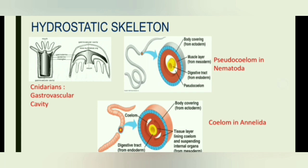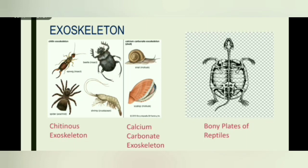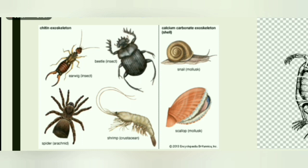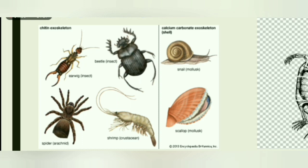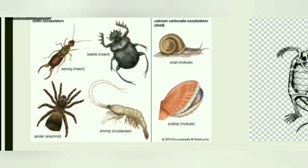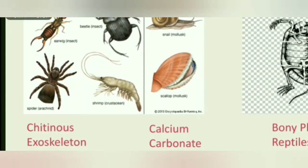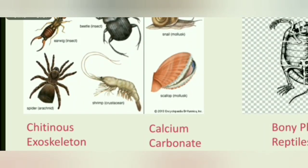The exoskeleton is a rigid outer covering of the body of the animal which acts as a skeleton. 'Exo' means out, so the exoskeleton is a skeleton acting as the outer covering of the body. There are different types: chitinous exoskeleton, calcium carbonate exoskeleton, and bone plates of reptiles. Arthropods possess an exoskeleton mainly composed of chitin, a non-cellular material, which is hardened by proteins or calcium carbonate.